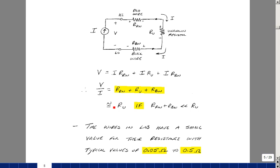So if we're measuring something that's 1000 ohms, this is really pretty small. And so we could ignore the effects of the wires.